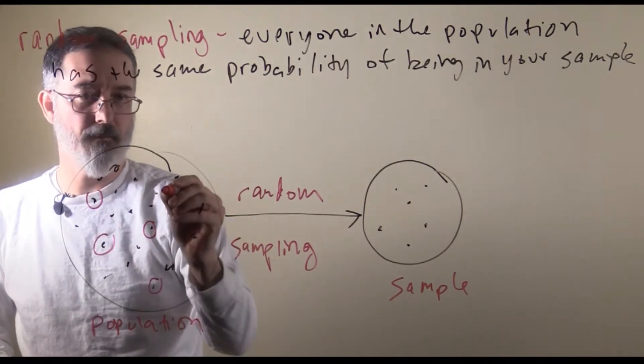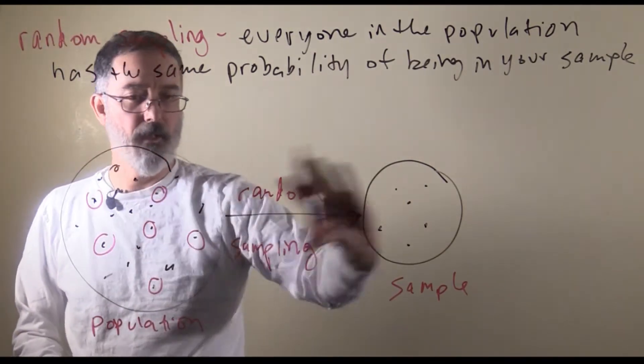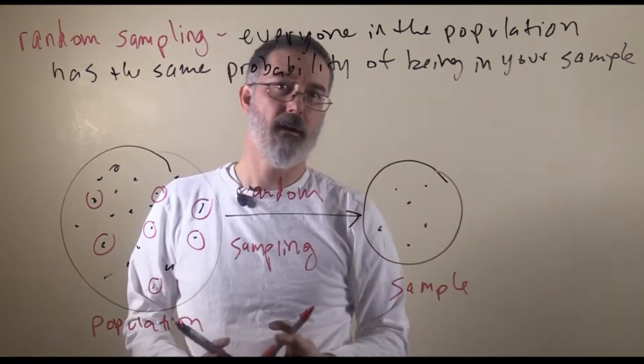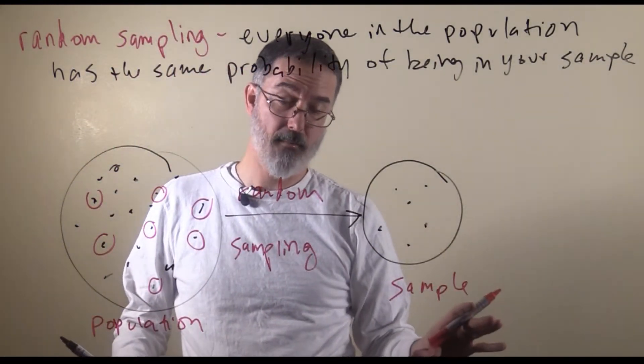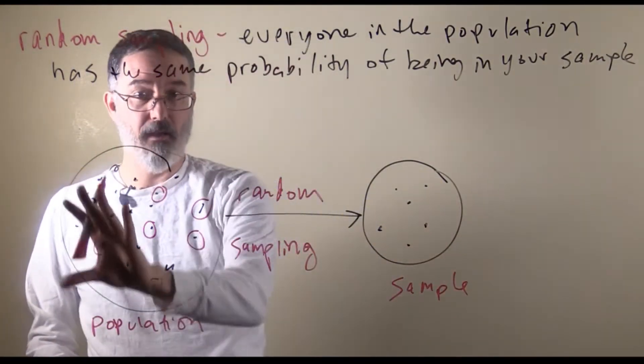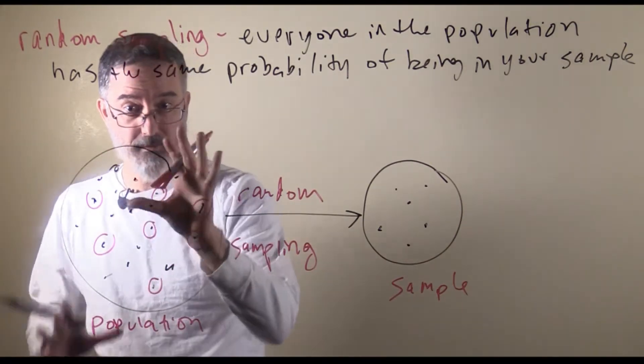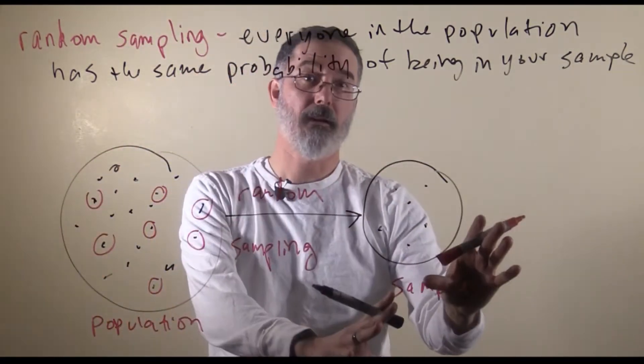So, they would just be completely randomly picked from the group to be brought into our sample. All of the inferential statistics that we talked about in this class assume that the population is here. We use random sampling to get our sample.